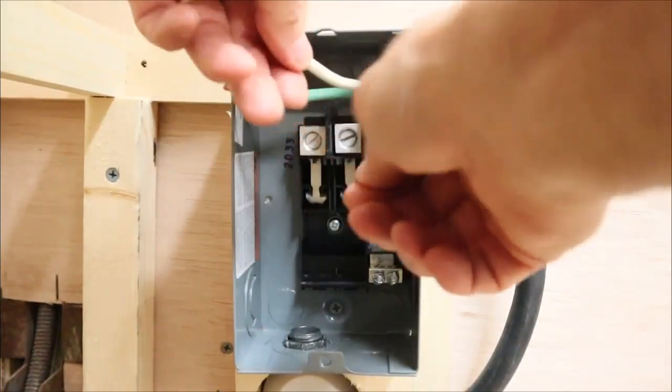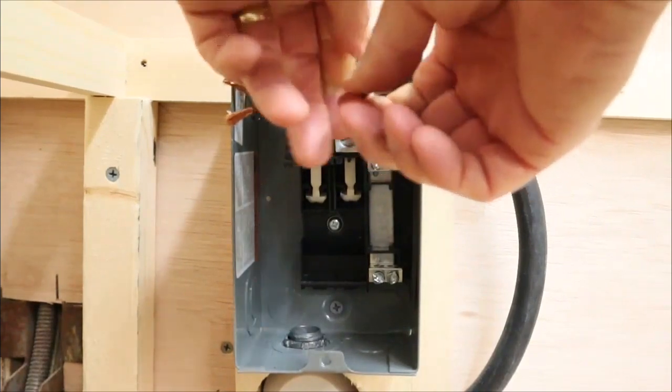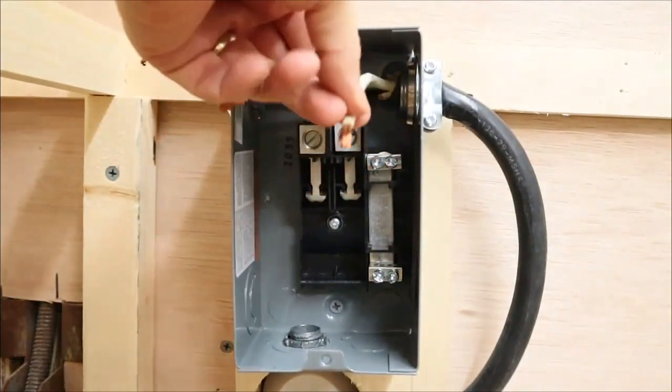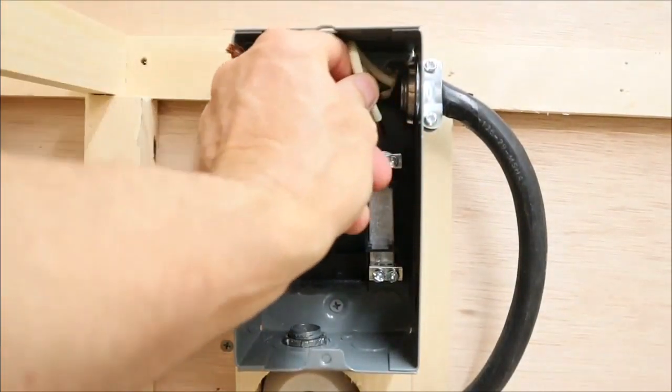Now that I have the 10-gauge wire clamped down, I'm going to attach the white wire to our common bar on the right side.